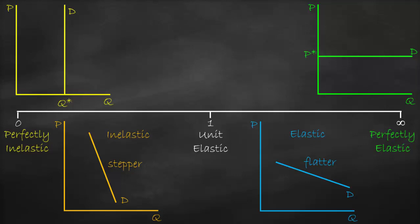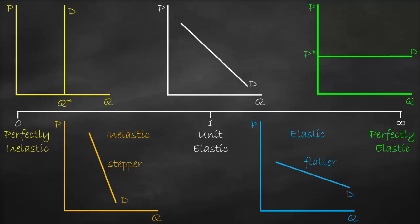The last case is unit elastic, which means percent change in quantity demanded equals percent change in price in absolute value. If we draw it with price on the y-axis and quantity on the x-axis, it will be an inverse 45-degree line. This is how you can tell the degree of elasticity based on the graph.